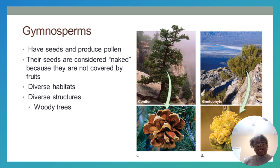Gymnosperms have seeds and produce pollen. The gymnosperm seeds are said to be naked. Gymnosperms live in diverse habitats — from mountainsides to grassy areas — and are diverse in structure, including various woody trees and shrubs. Remember that the seeds of gymnosperms are considered naked.